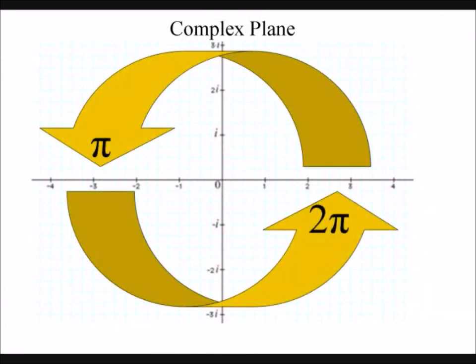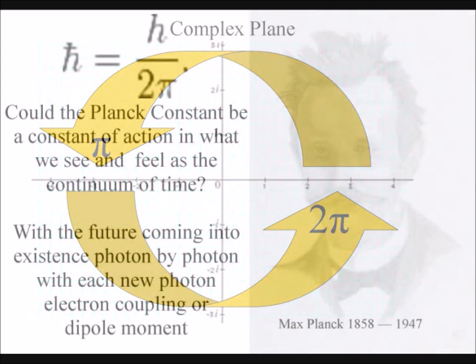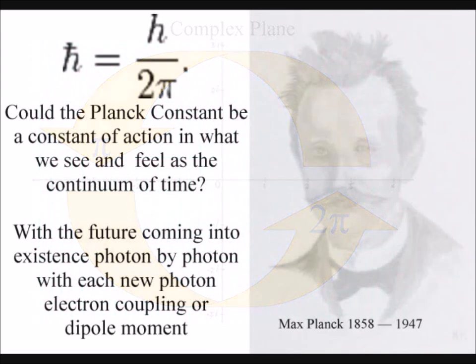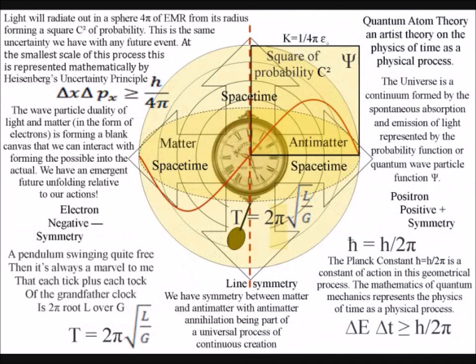This is why the Planck constant is linked with two pi, representing a constant of action in the geometrical process we see and feel as the flow of time.